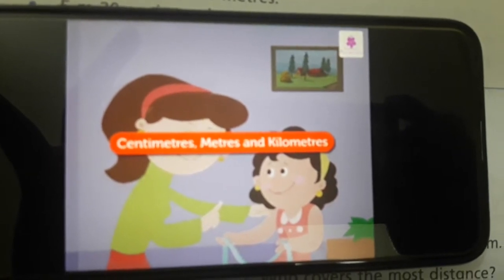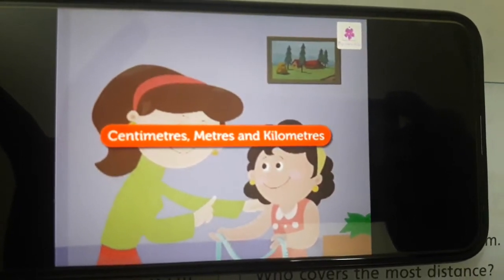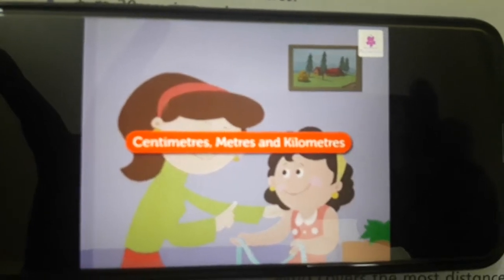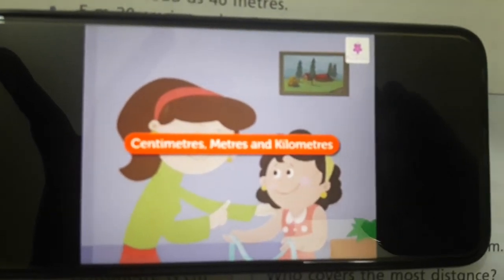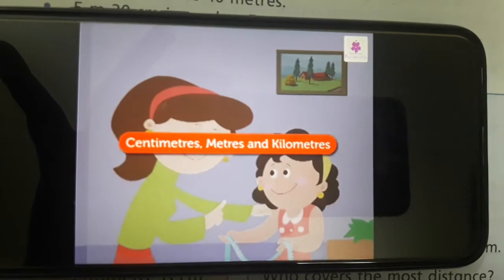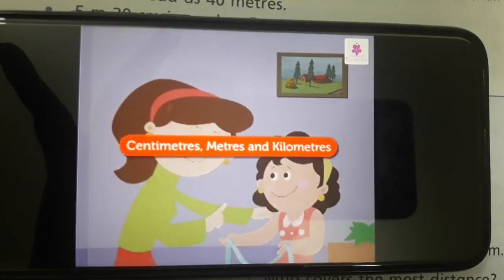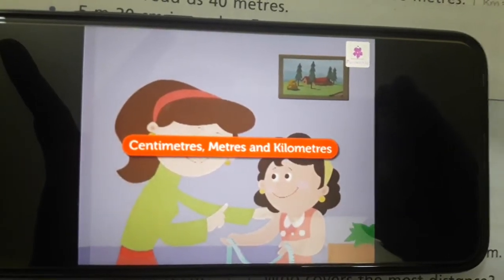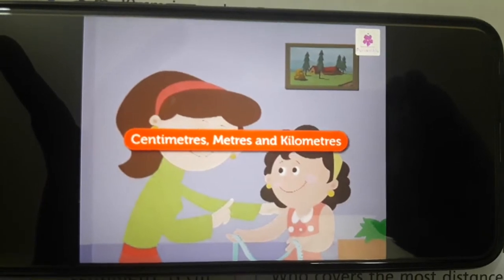Length is a measure of how long something is. We use a ruler or a measuring tape to measure things. The most commonly used units of lengths are centimeters and kilometers. We must use appropriate units for measuring lengths of different objects.